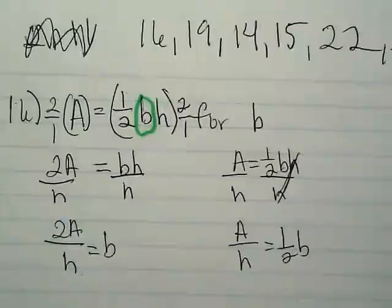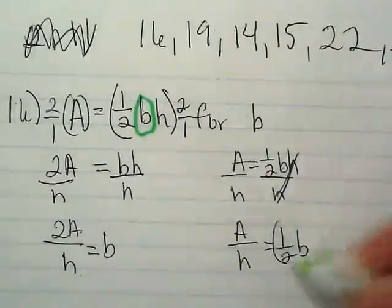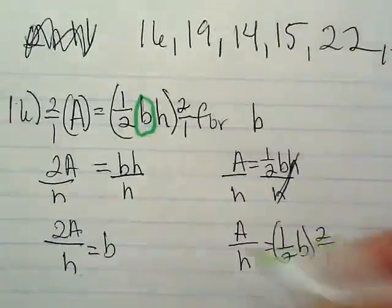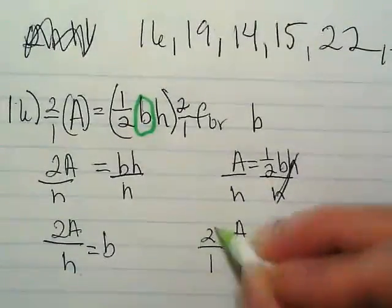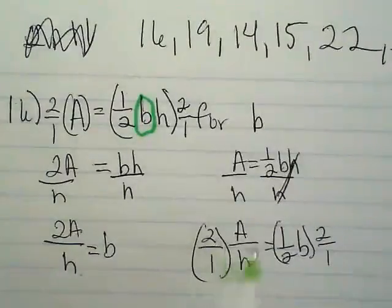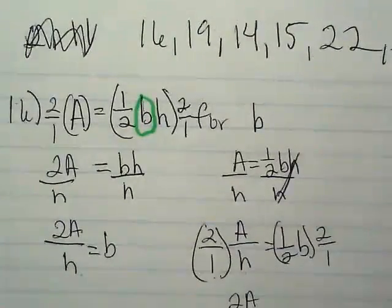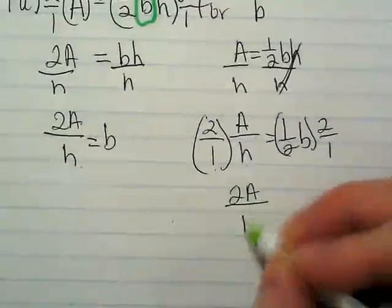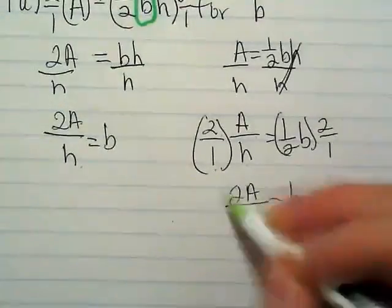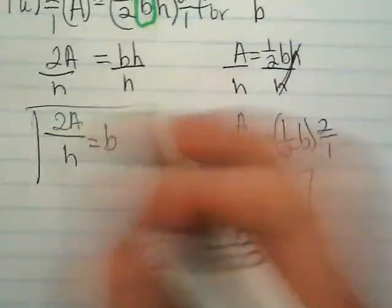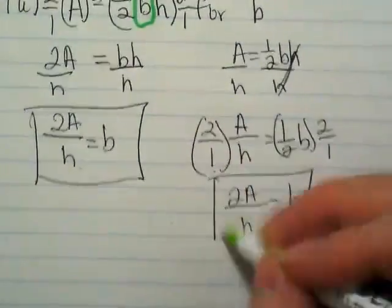That's going to get rid of the H here. And now I have A over H is equal to 1 half B. Now I need to multiply by 2 over 1, the reciprocal. 2 times A is going to be 2A. 1 times H is going to be H equals B. Same answer.